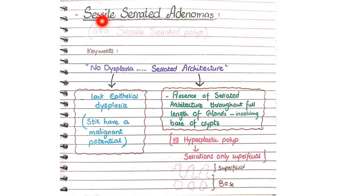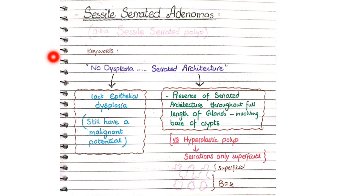To summarize sessile serrated adenomas: they show no dysplasia — they lack epithelial dysplasia — but are classified as adenomas because they have malignant potential to transform into adenocarcinoma. They have a serrated architecture throughout the full length of the epithelium, not only on the surface but also at the base of crypts. This concludes the pathological features of colonic adenomas and colonic polyps.